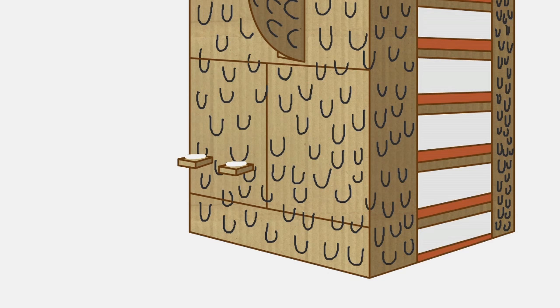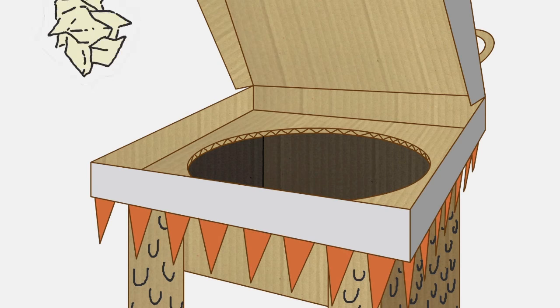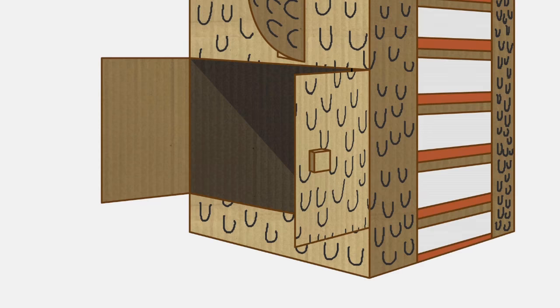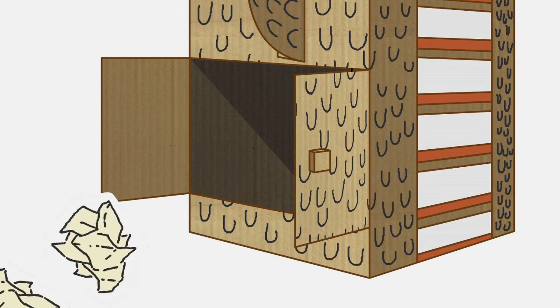Stick on some cardboard knobs so that you can fasten the doors with a rubber band. Then you can throw your scrunched up paper into the mouth and watch it all tumble out again through the door.